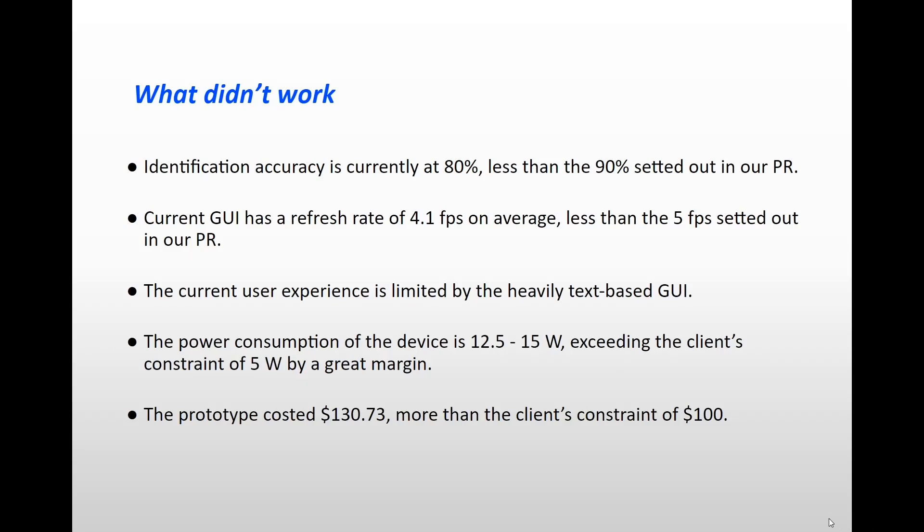Now, let's see what didn't work. The ORIS prototype satisfies all the functional requirements, but some performance requirements still need further improvement. First, the current identification accuracy is about 80 percent, which is lower than our performance requirement of at least 90 percent under a well-lit environment. The ORIS prototype is able to scan the resistor with a clear color band, but it may return the wrong identification result when the resistor's color bands are tiny or when the surrounding lighting condition is very limited or with some interference.